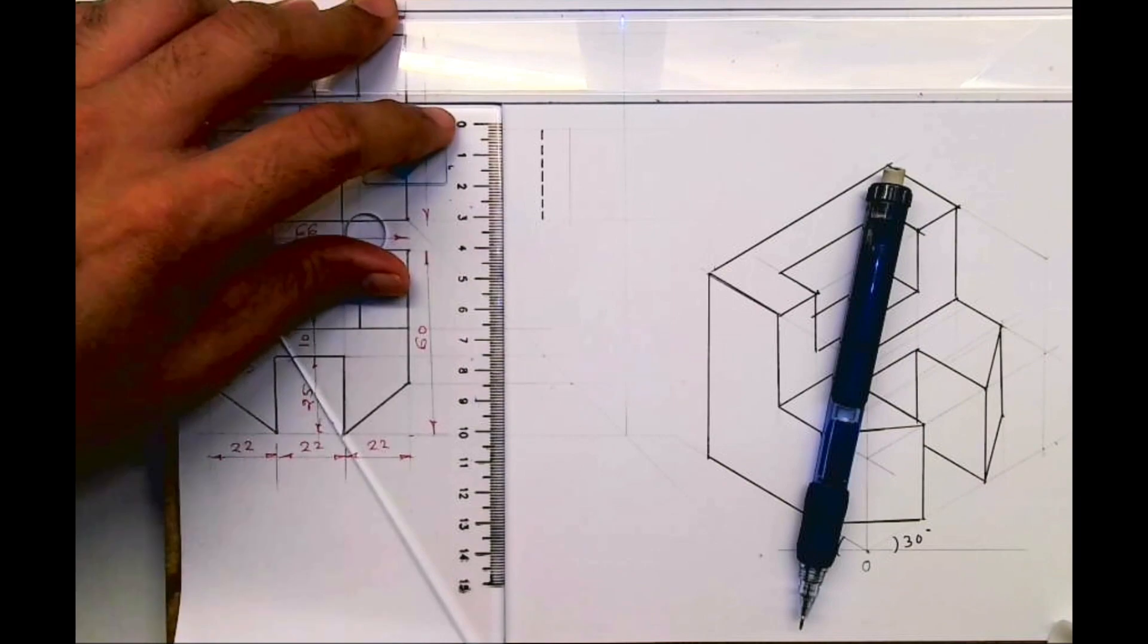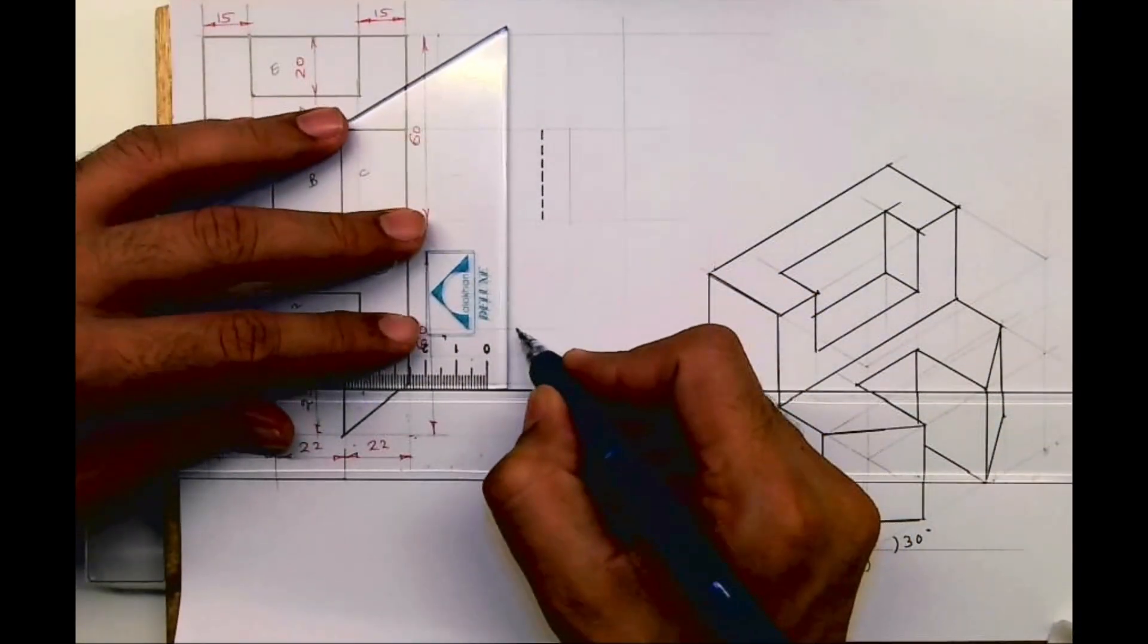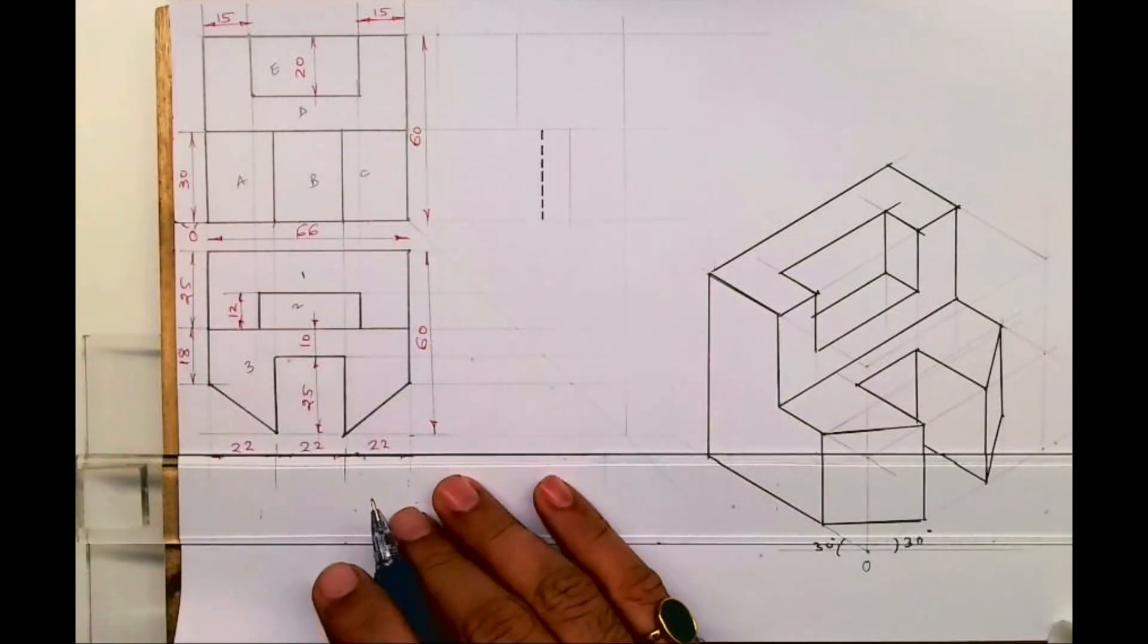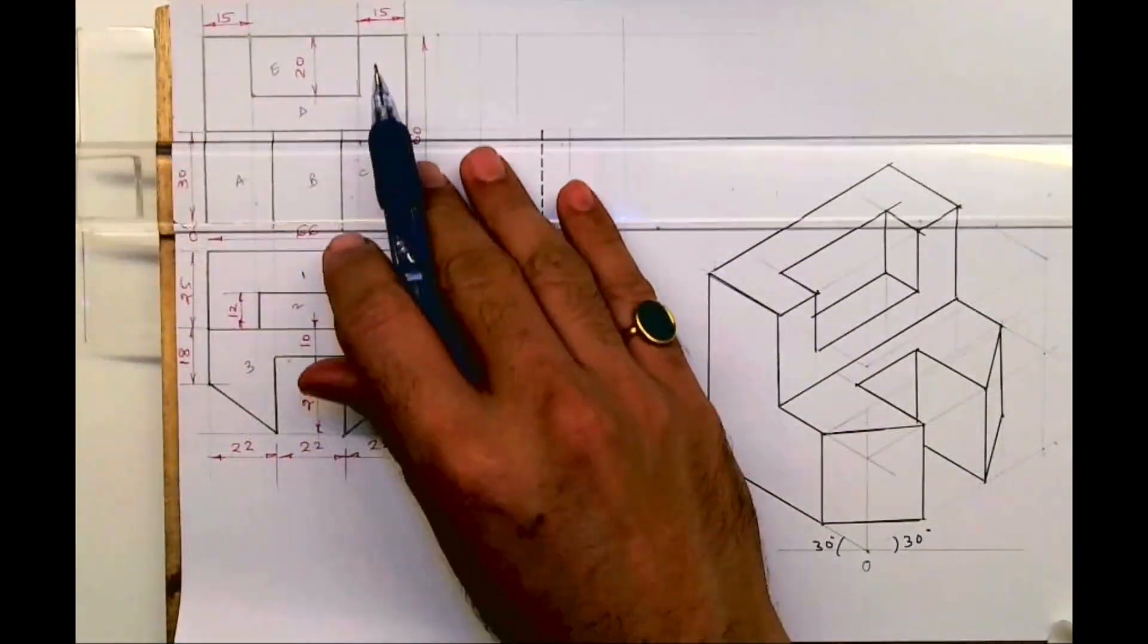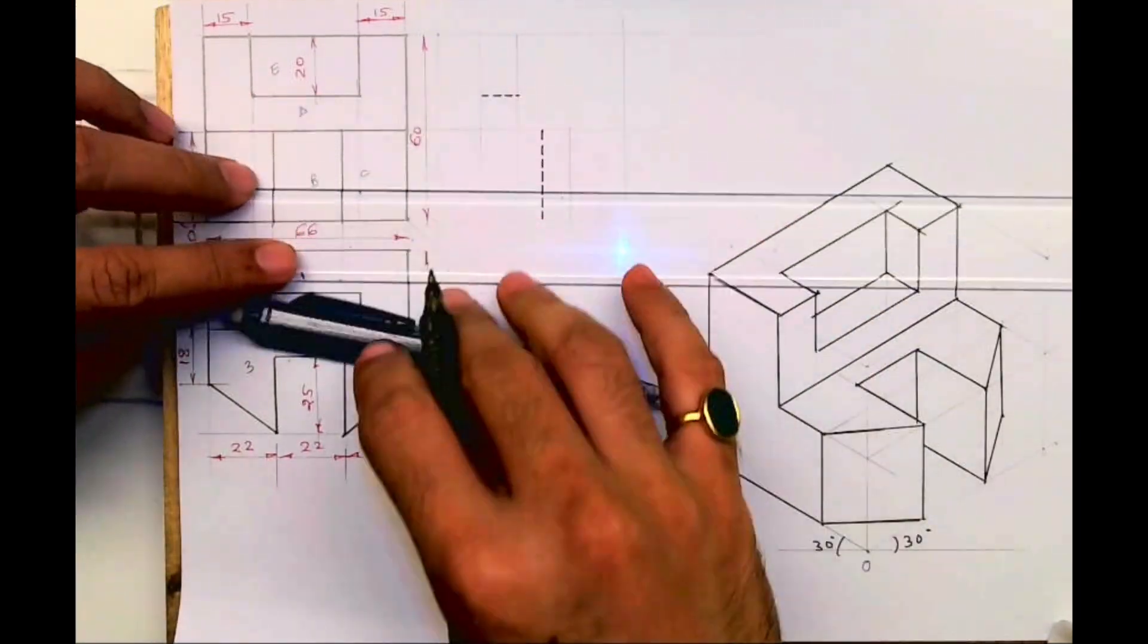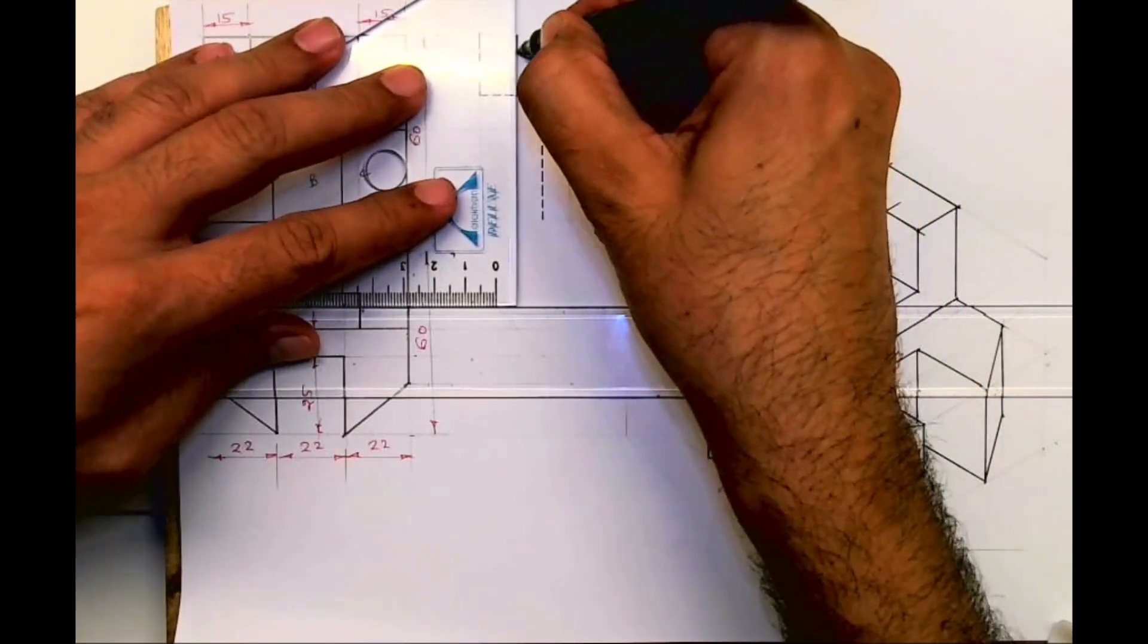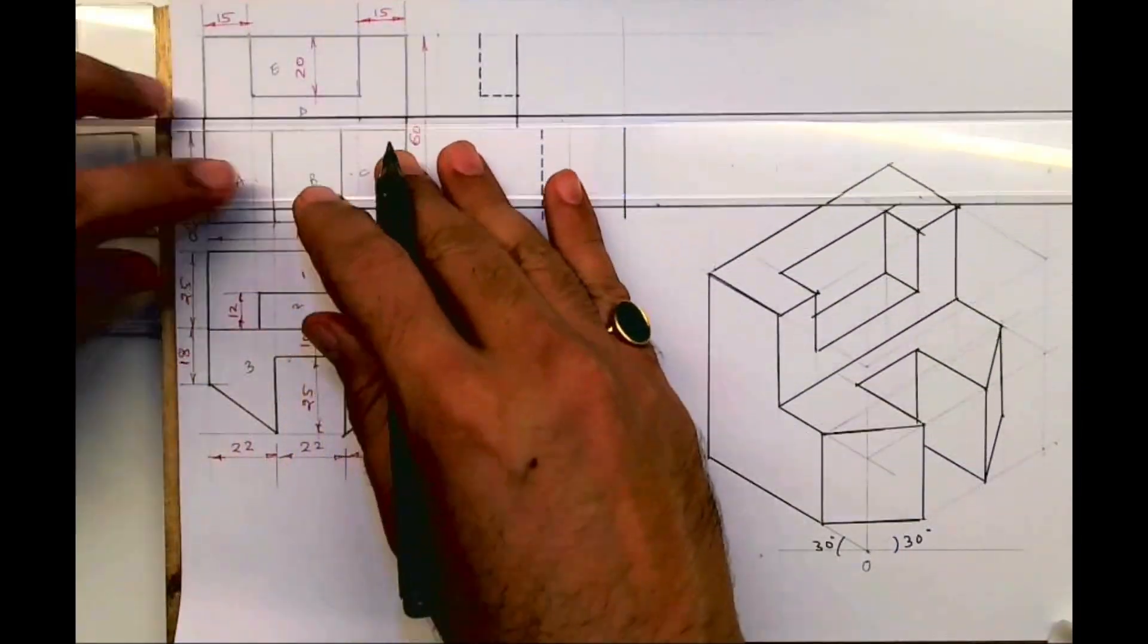This will be dotted because you can't see it. This portion is dotted, the rest all are dark lines so that you can darken it. So I hope you people have understood this sum. Thank you.